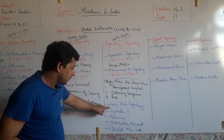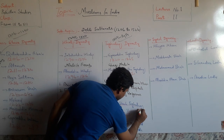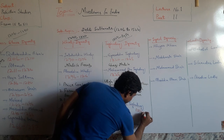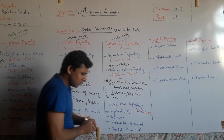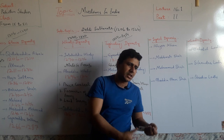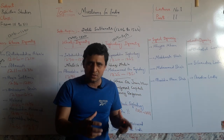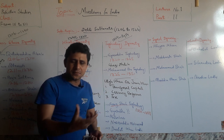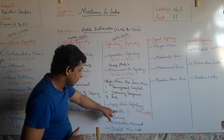After Muhammad bin Tughlaq, Firuz Shah Tughlaq ruled from 1351 to 1388. Firuz Shah Tughlaq was not a good general or warrior, but he was interested in building cities, gardens, wells, and public utility works. He built many cities, including Firozabad and Hazar Firoza. Giyasuddin II also built the city of Tughlaqabad.